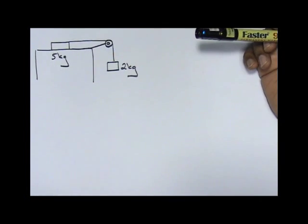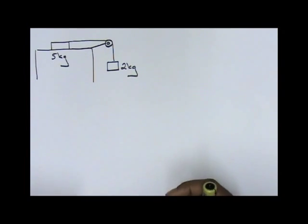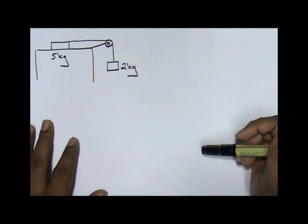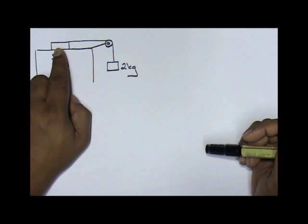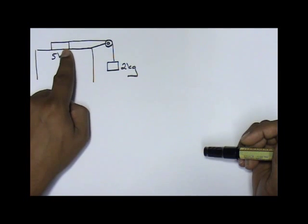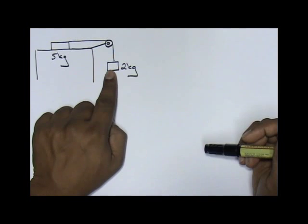Hi guys. Now earlier we did a pulley question whereby one weight was going up and another weight was going down. This question over here, one block, a five kilogram wooden block, will move to the right being pulled by this two kilogram weight that we have.